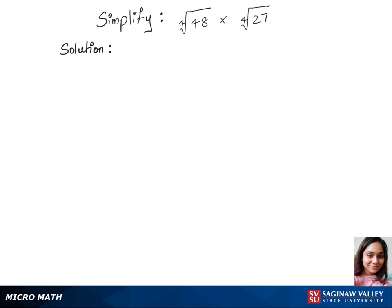We'll simplify this question by first splitting up the first part, which is fourth root of 48. So let's write fourth root of 48 split to 16 times 3, times fourth root of 27 remains the same for now.